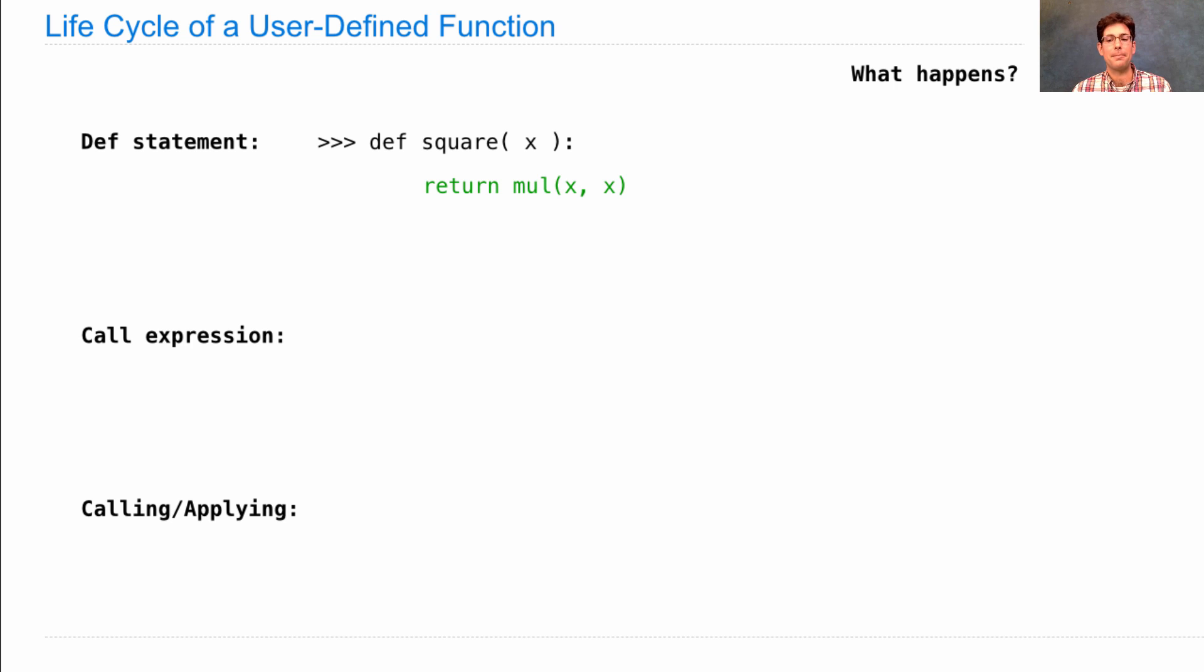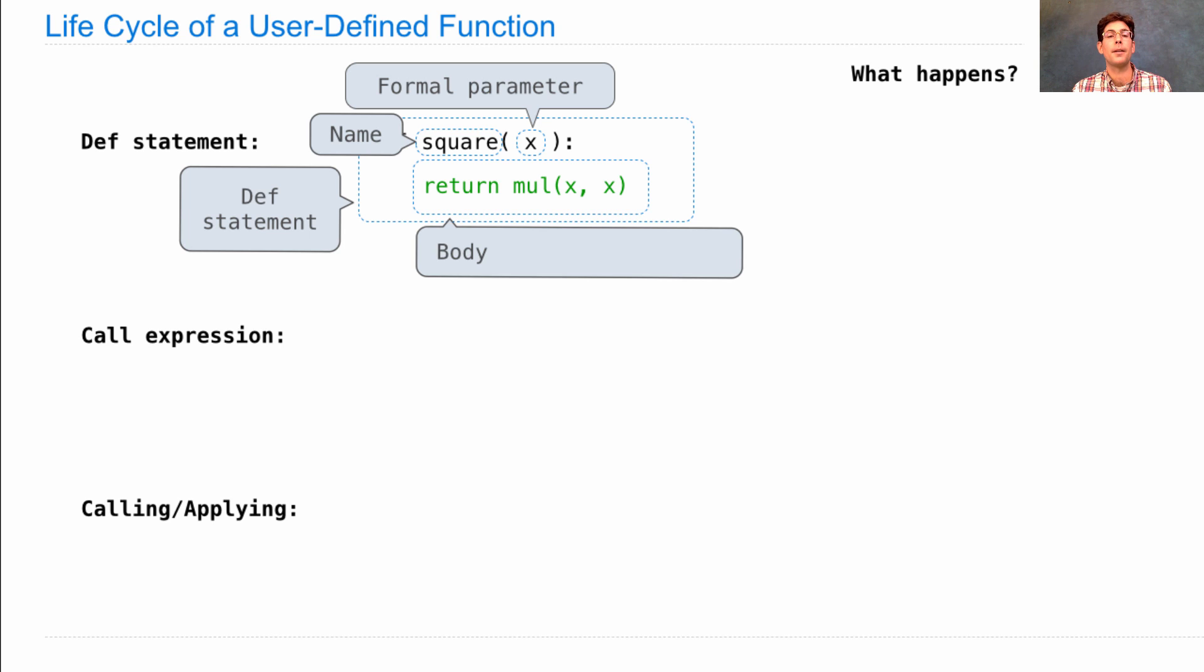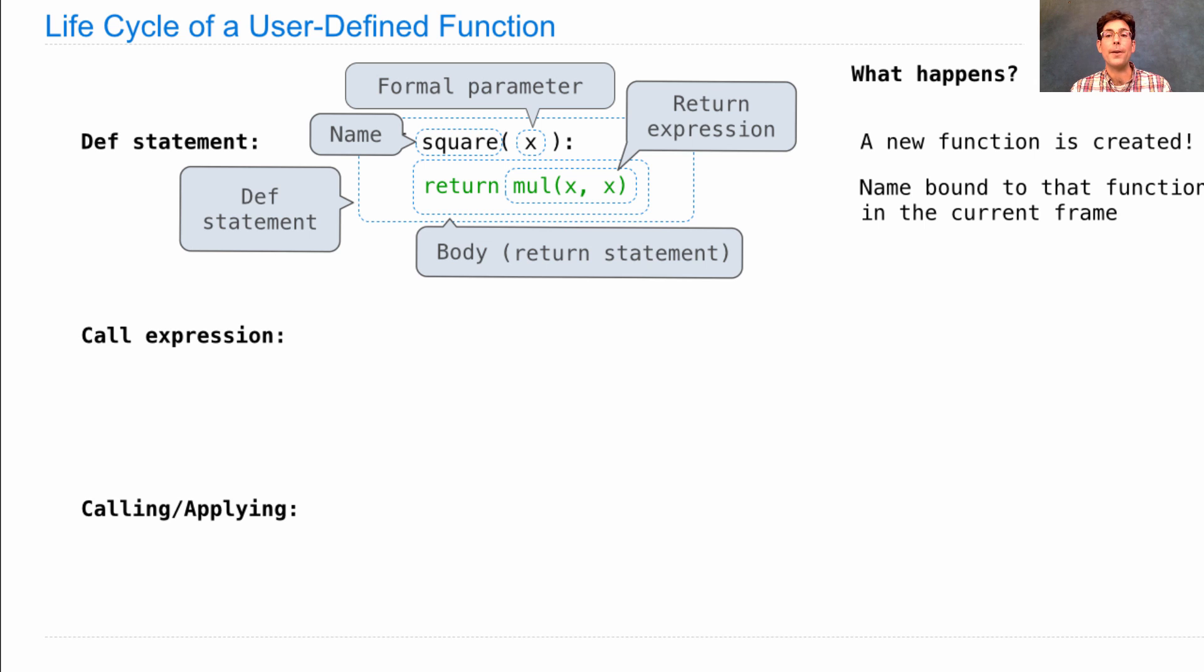A def statement looks like this. The whole thing is a def statement. The name of the function being defined is there. The formal parameter is within parentheses. There can be more than one formal parameter, and then they will be separated by commas. Indented below the first line is what's called the body. It can have multiple lines, but in this case, there's just a single return statement. And the return statement is the word return, followed by a return expression, which is the expression that gets evaluated whenever the function gets called. So what happens exactly when into the interpreter I type this def statement? Actually, nothing gets multiplied, but what does happen is that a new function is created, and the name square is bound to that function in the current frame.